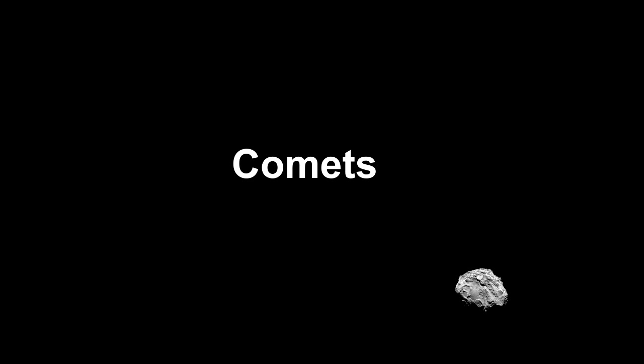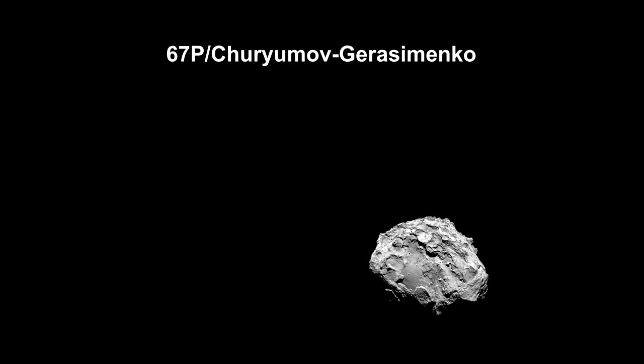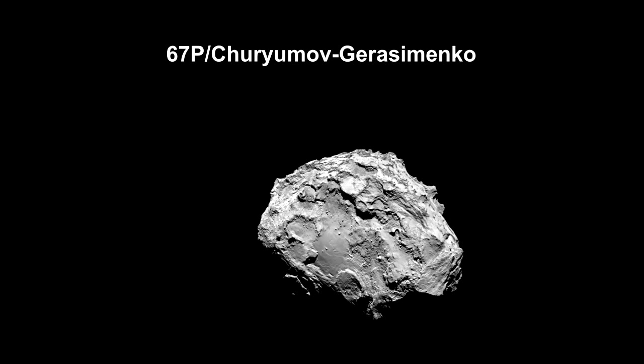A comet is a small solar system object made of a mixture of frozen water, ammonia, and various hydrocarbons, such as methane.